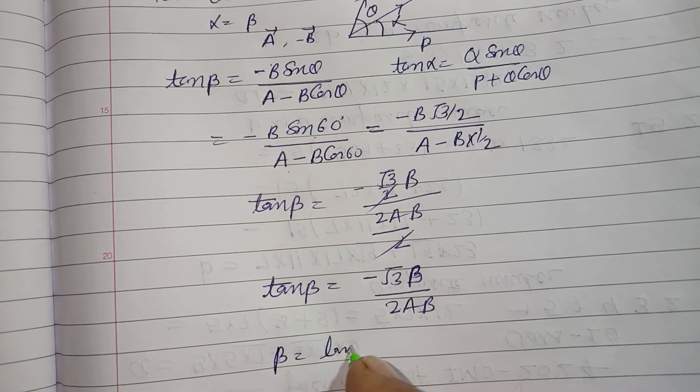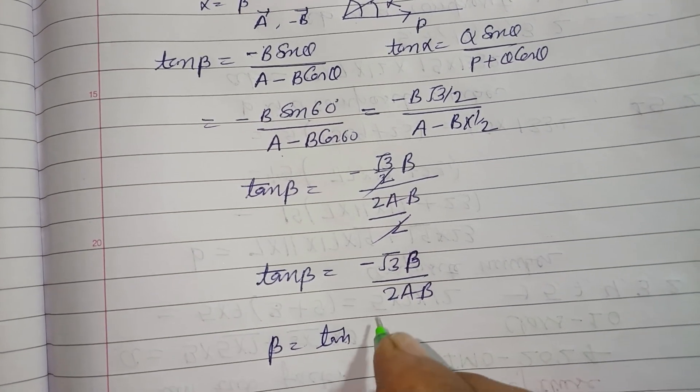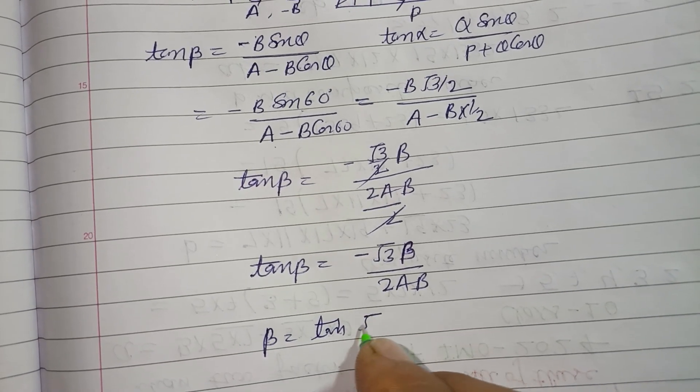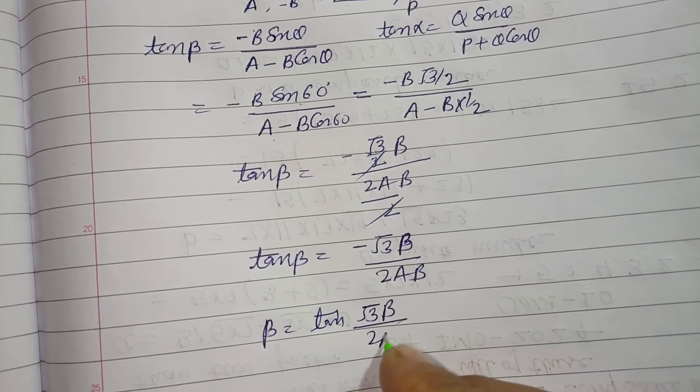So beta equal to tan inverse root 3B upon 2A minus B.